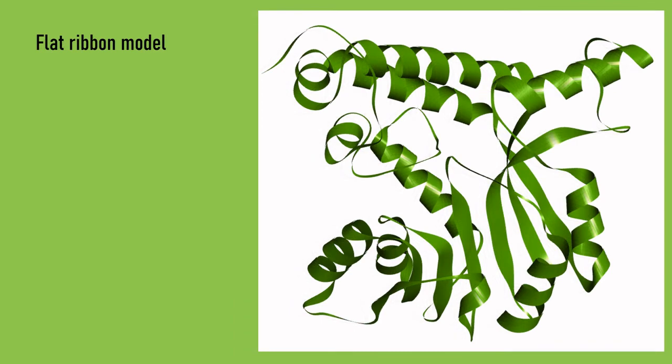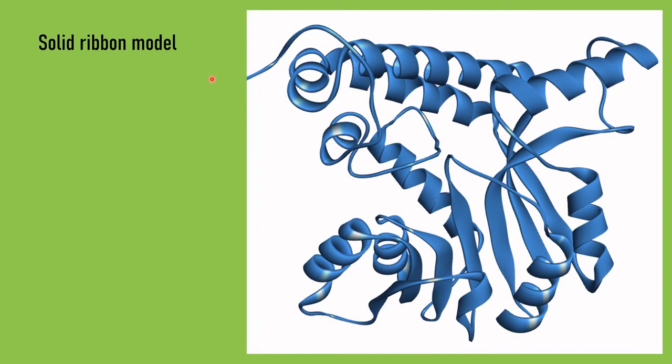This is a flat ribbon model. This model gives more clear representation of the protein. Here we can see the helices, the beta sheets, the turns, and the loops. Another model is the solid ribbon model. It is similar to the flat ribbon model. In this, the ribbons and sheets are more solid to see.